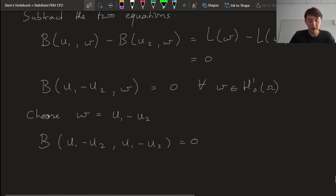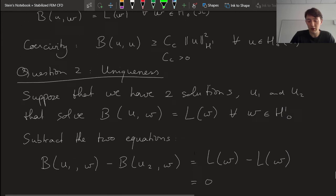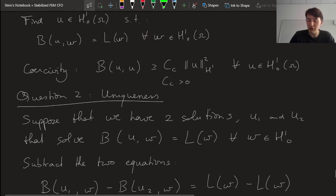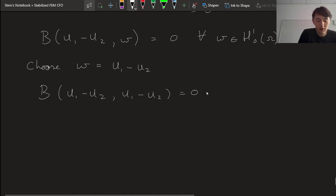So the only way that if I substitute in both slots the same function and the result is going to be 0, the only way that that's going to be true is if the function that I substitute in both slots is equal to 0. So due to the coercivity of B,